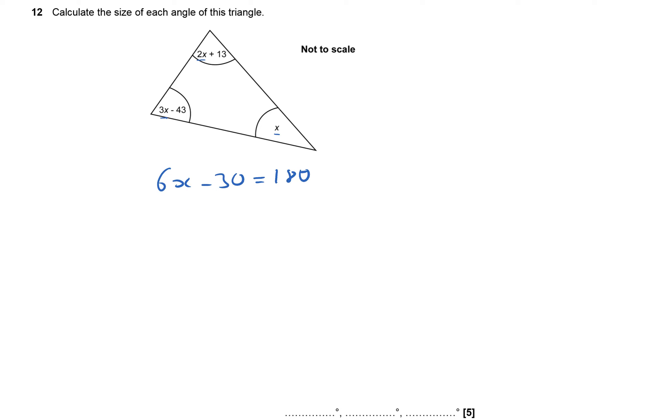And so now I'm going to solve that. I've got 6x and I'll get rid of the minus 30, so I'm going to add 30 to both sides and that will give me 6x equals 210. I don't want six of them, I just want one of them, so I'm going to divide both sides by six. I've got a calculator, so x equals 35 degrees.